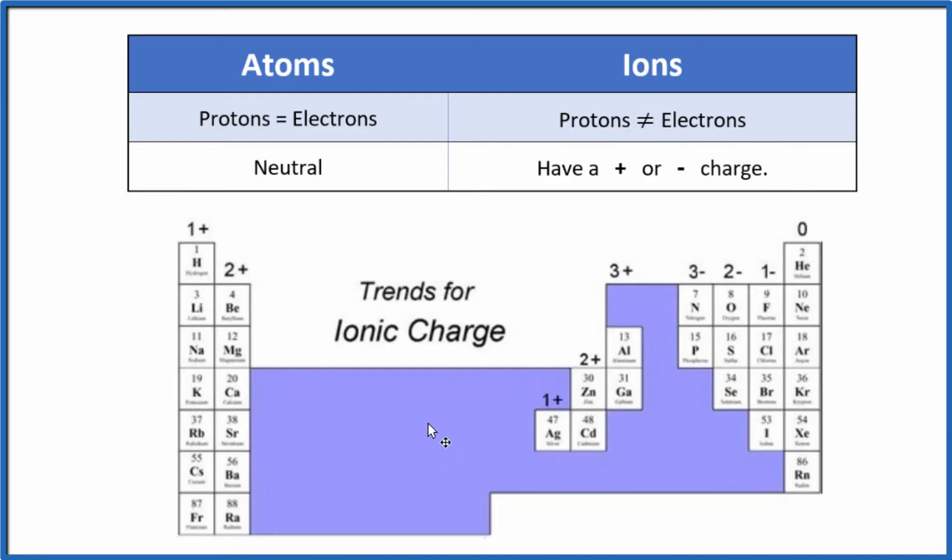Transition metals will be positive, but it varies how many electrons they'll lose. And over here, the non-metals will actually gain electrons and have a negative charge. Noble gases are neutral. They don't gain or lose, so they don't have an ionic charge.